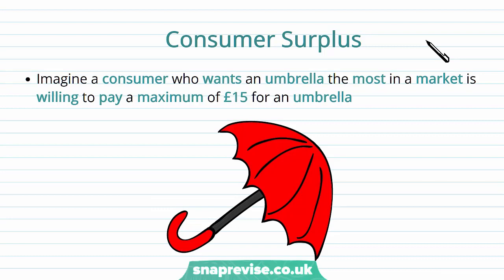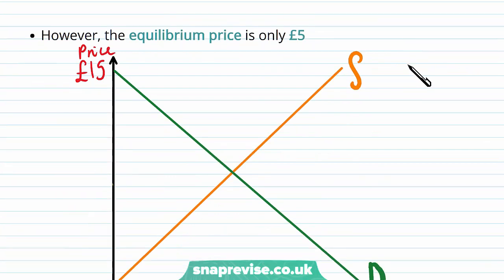Okay, so to start our discussion off about Consumer Surplus, we're going to be considering a consumer who wants an umbrella and that consumer is the person who wants the umbrella the most within that market. So that consumer is willing to pay a maximum of £15 for this umbrella. Now this is an extreme case but we're going to be using this extreme case to build our example.